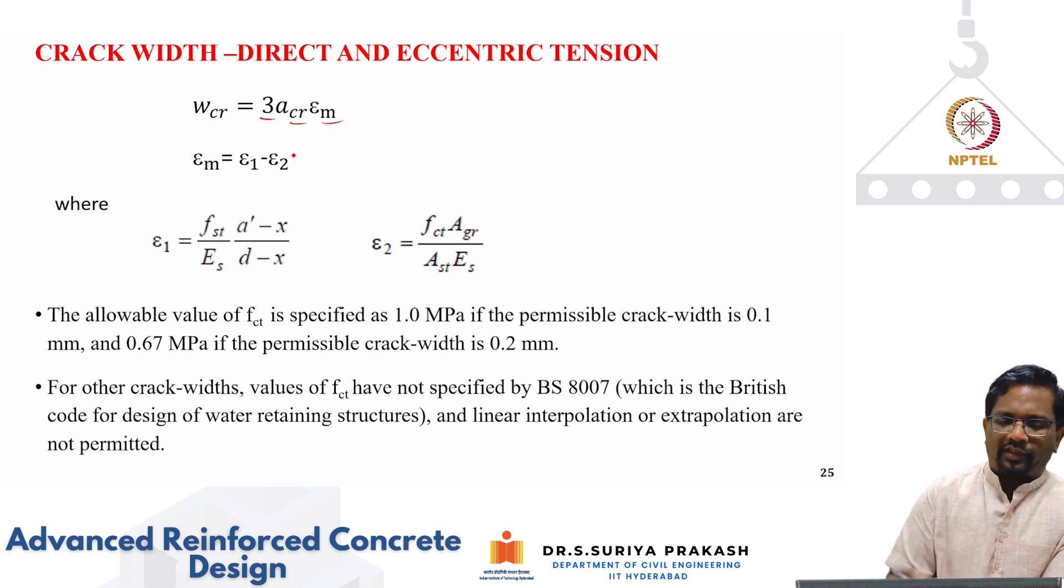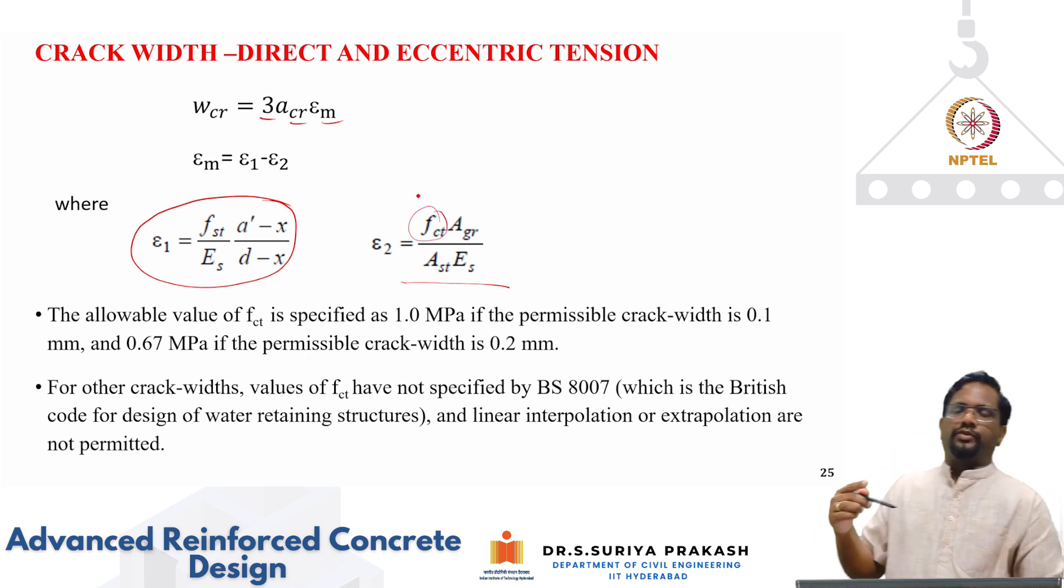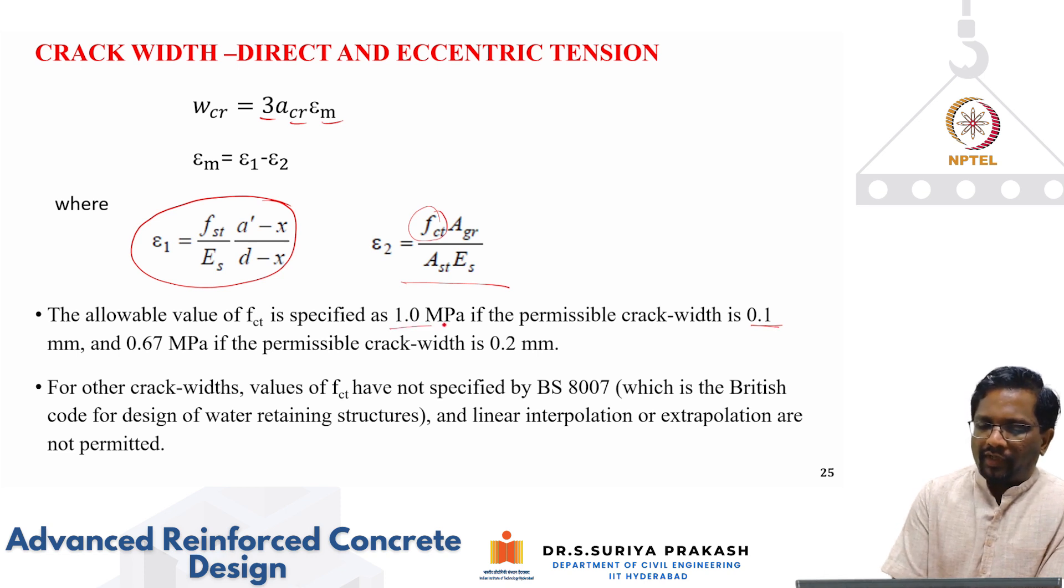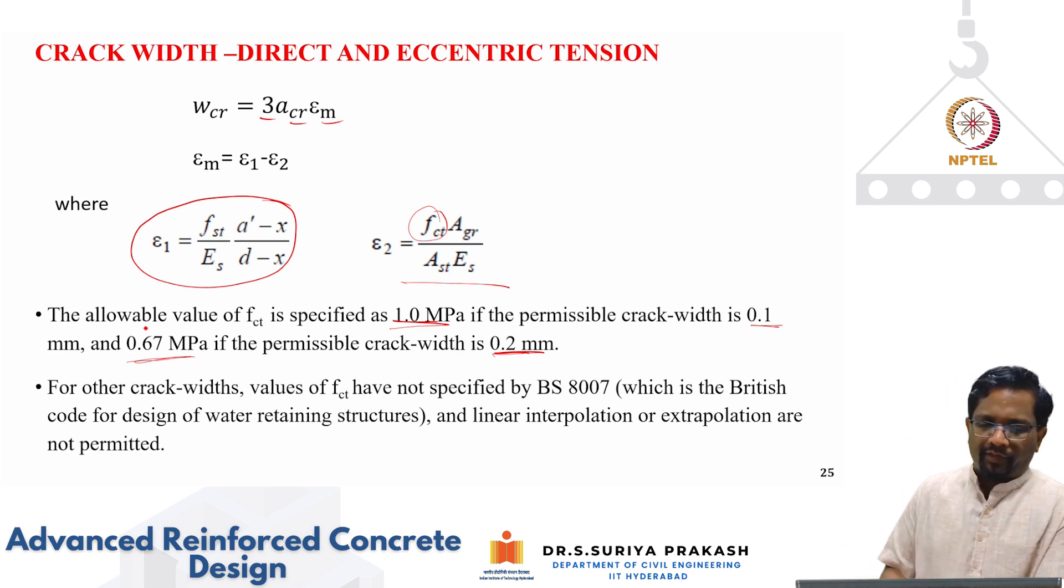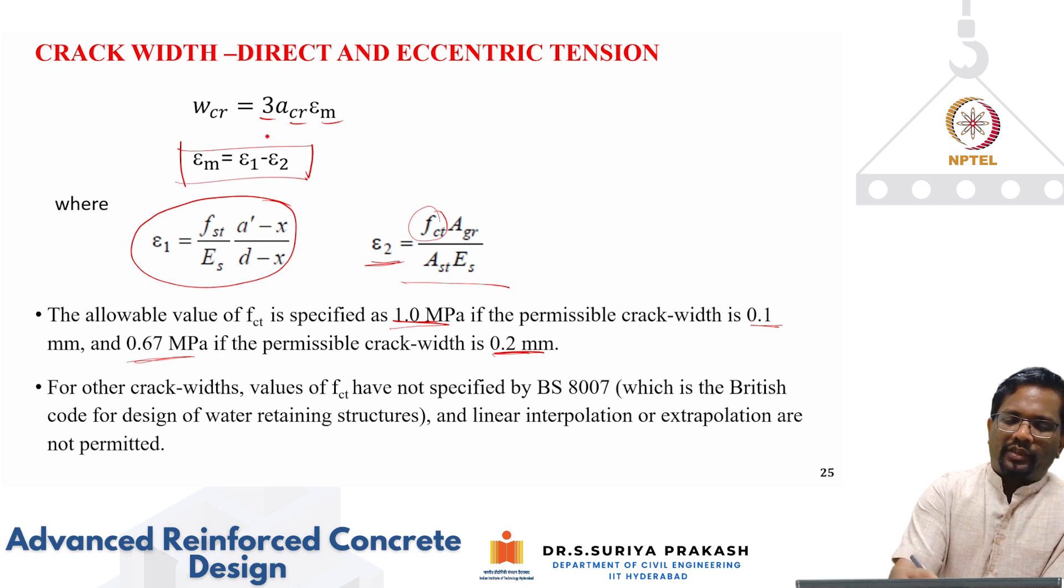What is epsilon m again? Epsilon 1 minus epsilon 2. And this epsilon 1 is what we have discussed this previously. And epsilon 2 is taken by this kind of an average strain which is specified. Here the British code is giving different FCT for like in the previous case for IS code simplification, we took FCT as 0.67 megapascal, though it was specifying 0.55. In this case, if you are limiting your crack width to 0.1, then you can take 1 megapascal for FCT. But if you are limiting it to 0.2 millimeter, then you can take slightly a lower value, a little bit more conservative. You can hire the crack width. Again, the ability of the concrete to contribute in tension is also going to be less. That is the reason code is saying that you take 0.67 and using this, you plug in and then you get your epsilon 2 and subtract it from epsilon 1 to get your mean strength. Once you get your mean strength, then you put it in your crack width equation 3 into ACR multiplied by epsilon m, you get your crack widths.